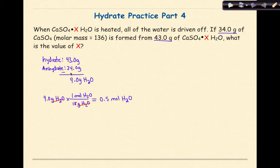The next thing I want to do is record the 34 grams of anhydrous salt, which in this case is CaSO4. In the problem, they tell me that the molar mass of CaSO4 is 136 grams.